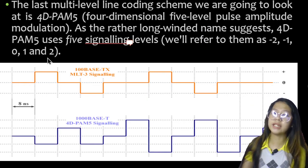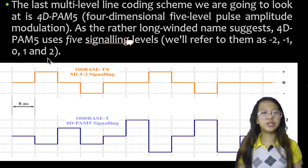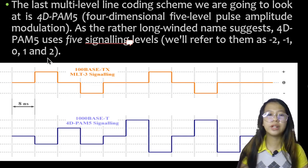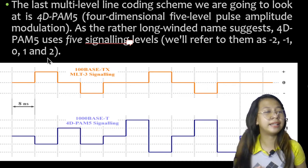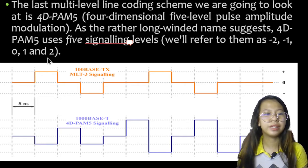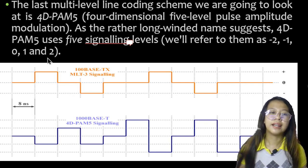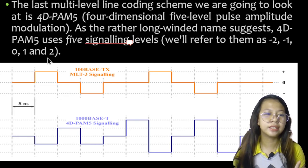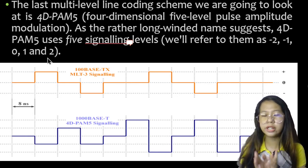4D-PAM5 — 4-Dimensional 5-Level Pulse Amplitude Modulation — uses 5 signaling levels: negative 2, negative 1, 0, positive 1, and positive 2. The 4D part refers to the fact that data is transmitted using 4 wire pairs simultaneously. In this technique, all 8 bits are fed into the wires simultaneously and transmitted using one signal element. Gigabit LANs use this encoding technique to transmit one Gbps of data over four copper cables, which can handle 125 Mbaud.